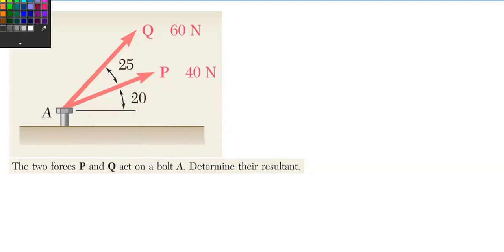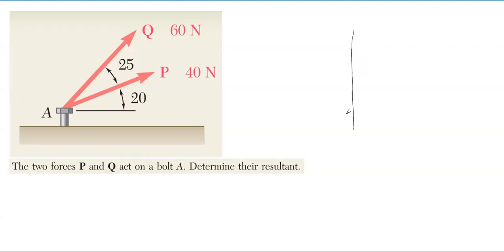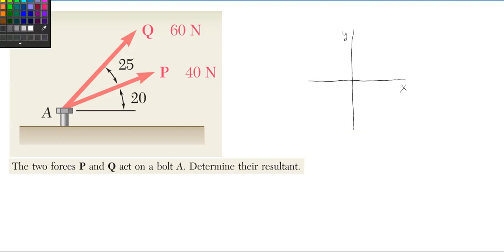First thing you want to do with these types of problems, just starting out until you get the hang of them — it's always helpful to draw a free body diagram. This problem at the start is not very complex, and a free body diagram may not be necessary from your point of view, but we're just going to start with one anyways. Since the forces are acting at point A, we're going to make point A our origin of our coordinate system.